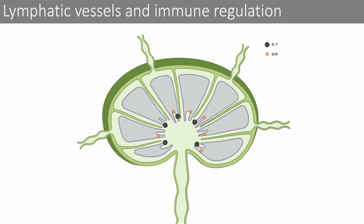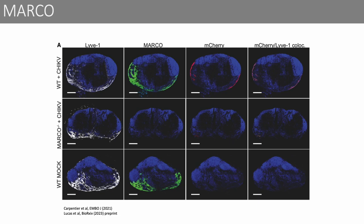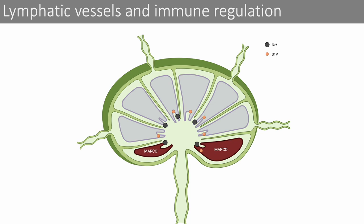Next, let's look at another scavenger receptor called MARCO. MARCO is highly expressed in the medullary sinus LECs in the lymph node. Previous work has shown that LECs in the lymph node are able to capture and archive viral antigens for several weeks. In addition, these LECs seem able to exchange antigen with dendritic cells and could thus influence T cell function long after viral clearance. MARCO, however, seems able to capture viruses and prevent their further dissemination. In this image, we can see how viral particles labeled with mCherry are co-localized with MARCO expression in wild-type animals, but not in the MARCO knockout. So we can add MARCO as a novel molecule expressed on medullary sinus LECs with the potential to influence antiviral immune response.